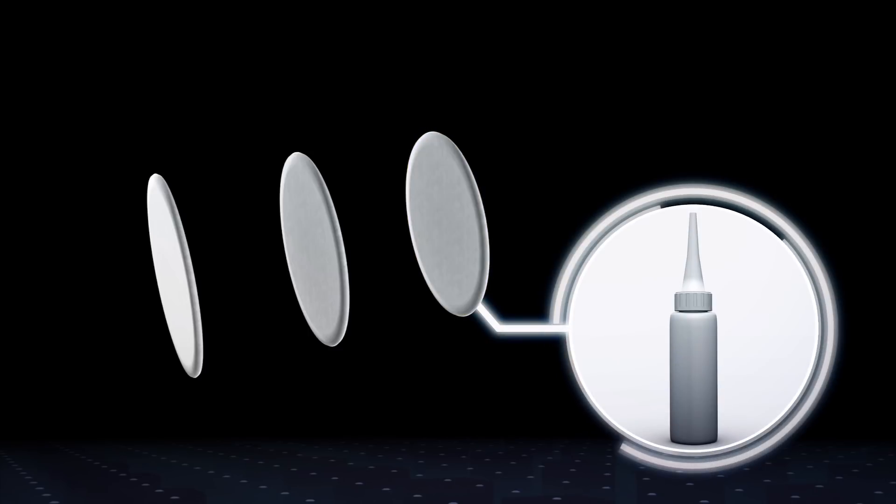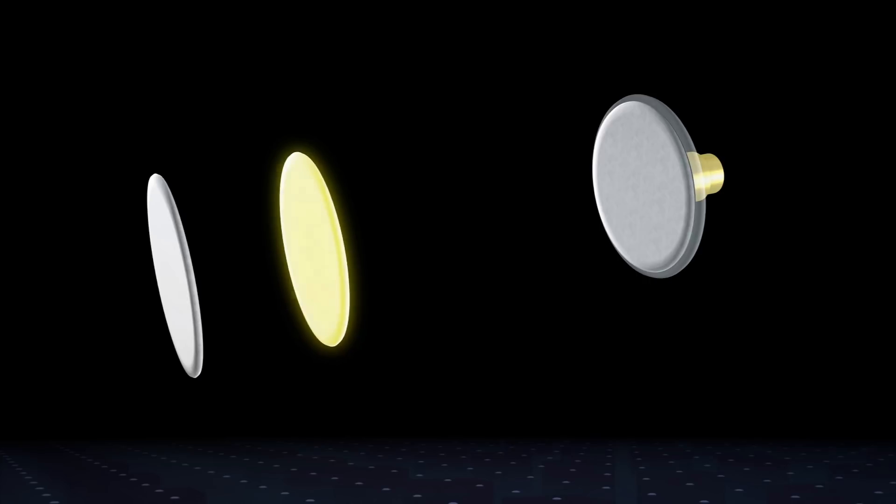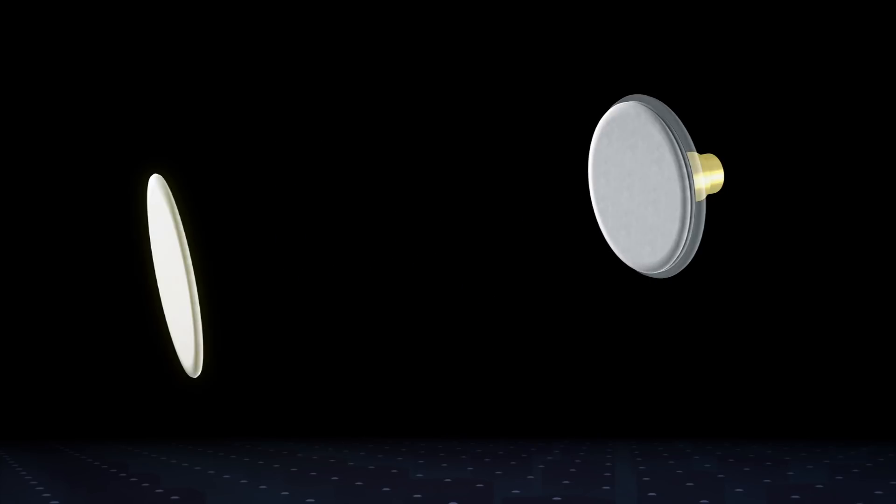One layer is impermeable and contains an adhesive to hold it onto a piece of jewelry. The middle layer contains the contraceptive hormone in solid form, while the outer layer is a skin adhesive that allows the hormone to be transferred.